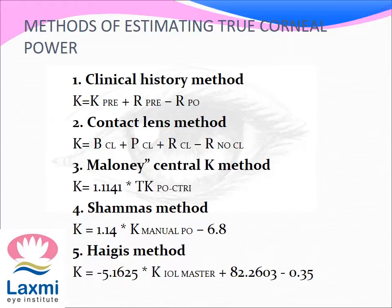There are different methods of estimating the true postoperative corneal power. These include the clinical history method, the contact lens method, Maloney's central K method, Shammas' method, and Haigis' method.